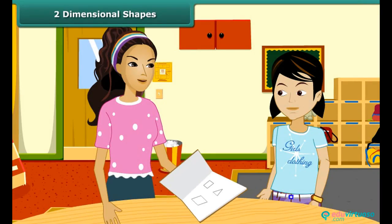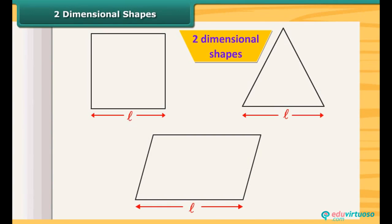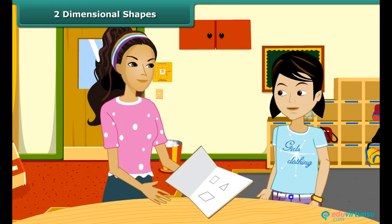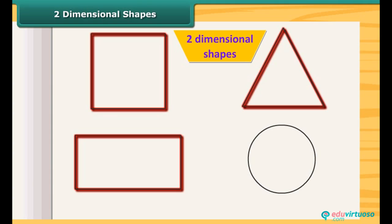Look at these shapes. These are all two-dimensional shapes. They have only two measurements, length and breadth. You mean all the shapes that we draw in our notebook are two-dimensional? Yes, you are right. All those shapes that we can draw in our paper and which have only two measurements are two-dimensional shapes. A square, rectangle, triangle, circle etc.